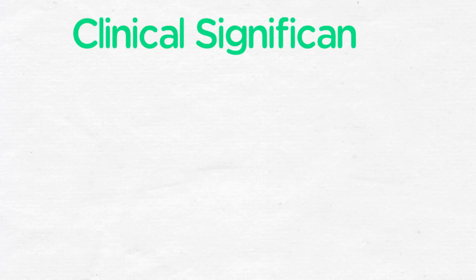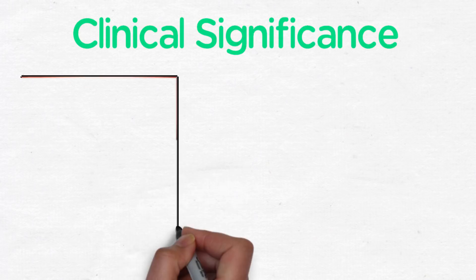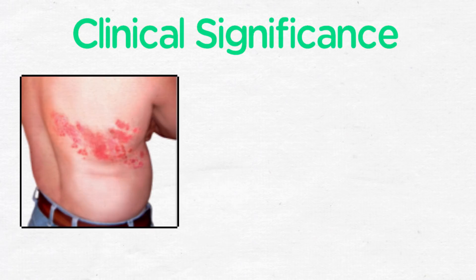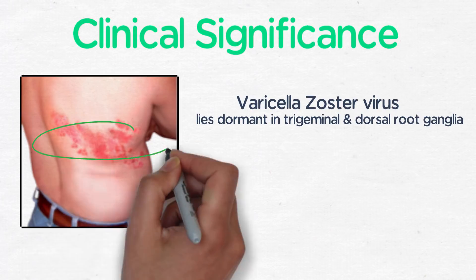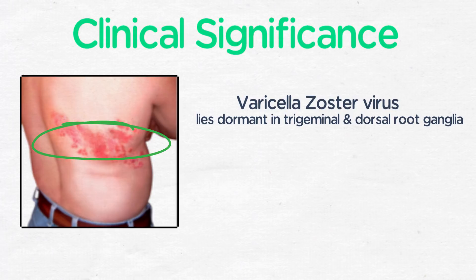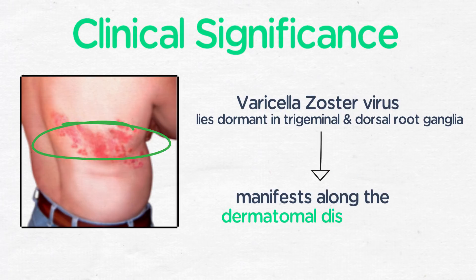The clinical significance of the dermatomes is that it will help you localize problems in different areas of the spine, but also that certain infections lie dormant in the trigeminal and dorsal root ganglia. They can reactivate and cause shingles. When the virus does reactivate, it manifests along a dermatomal distribution.